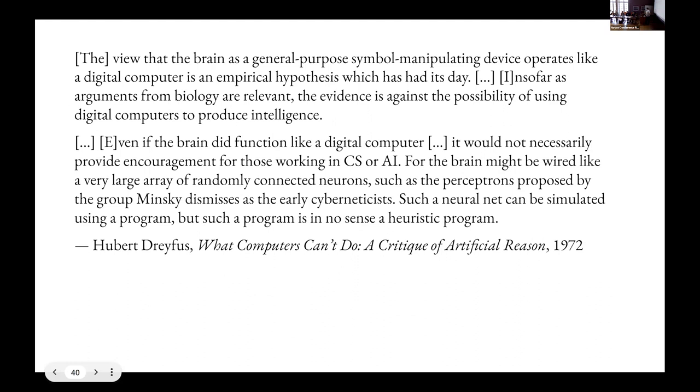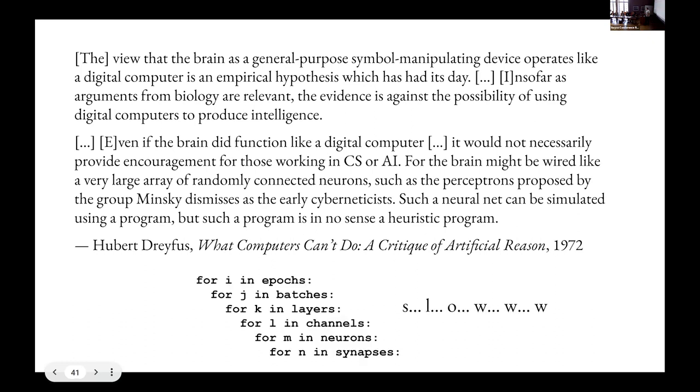Dreyfus' critique of the brain as a general purpose symbol manipulating device does not rule out this platform independence. He's very explicit in saying even if the brain did function like a digital computer, it would not necessarily provide encouragement to those working in CS or AI, for the brain might be wired like a very large array of randomly connected neurons, such as the perceptrons proposed by the group Minsky dismisses as the early cyberneticists. Such a neural net can be simulated using a program, but such a program is in no sense a heuristic program. So this is an important point because we're using classical computers today to simulate neural nets, but that in no sense means that the neural nets are classical computers or that the classical computation is what is happening in those neural nets. And I think sometimes, in particular on the philosophy side, we get wrapped up a little bit around the axle on this point.